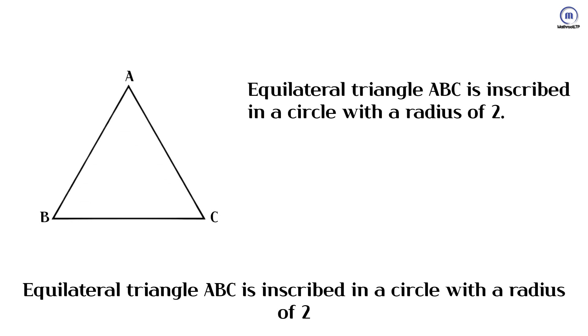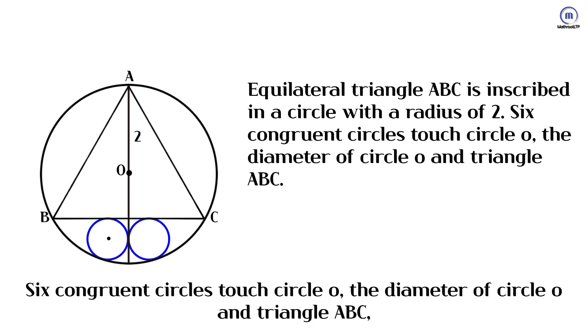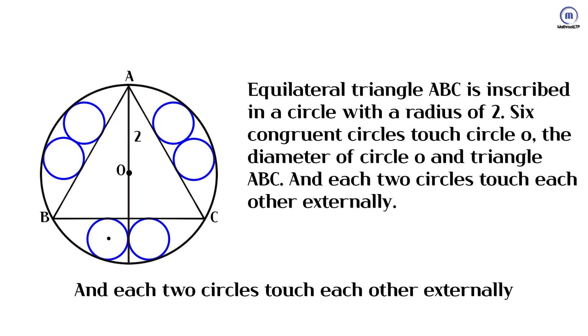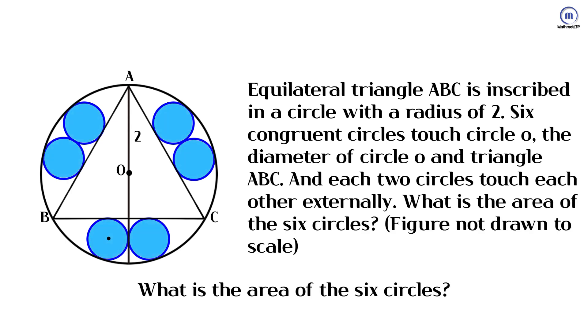Equilateral triangle ABC is inscribed in a circle with a radius of 2. Six congruent circles touch circle O, the diameter of circle O, and triangle ABC. Each two circles touch each other externally. What is the area of the six circles?